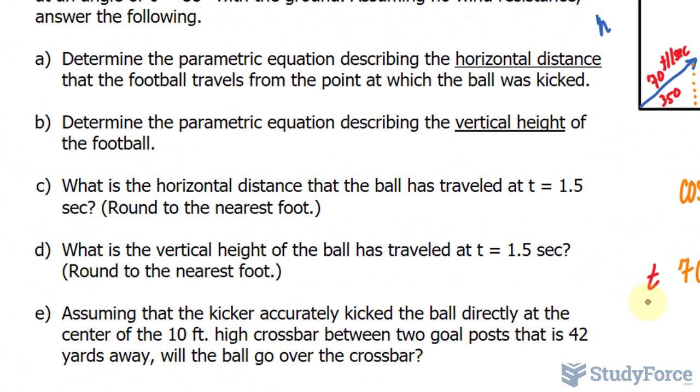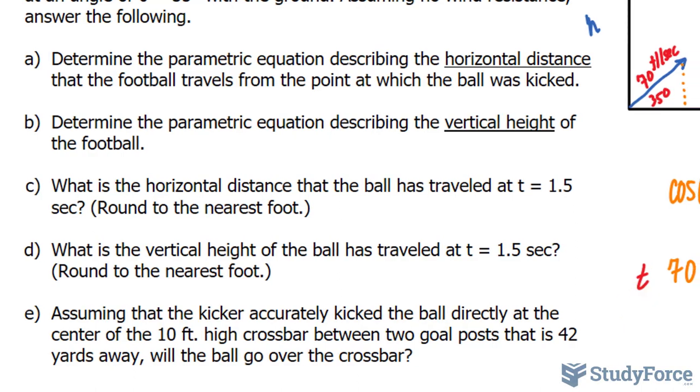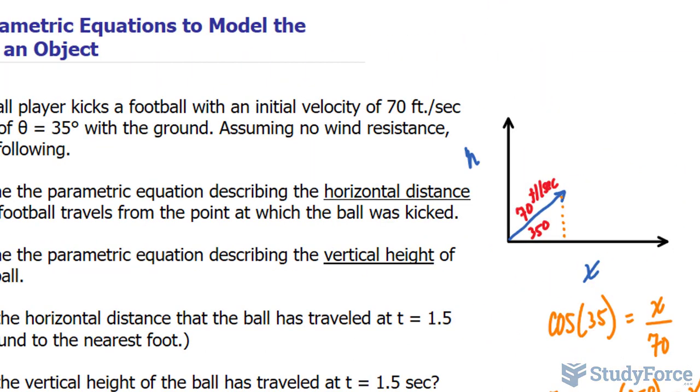For question B, determine the parametric equation describing the vertical height of the football. This one's more complicated because when something is going up, there is a force of gravity pulling it downwards. You have to consider that while creating your equation. In addition, the initial height is important, which here is zero from the ground.